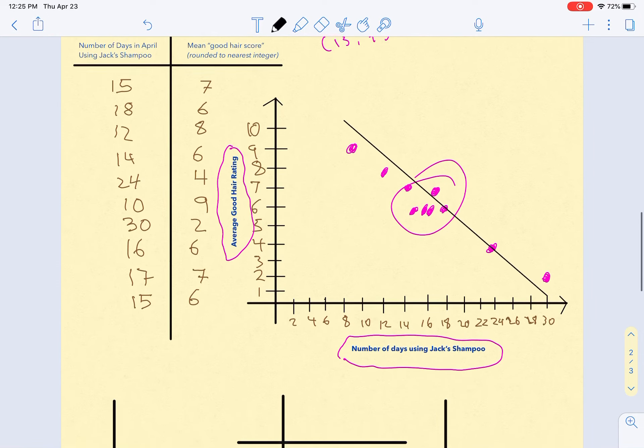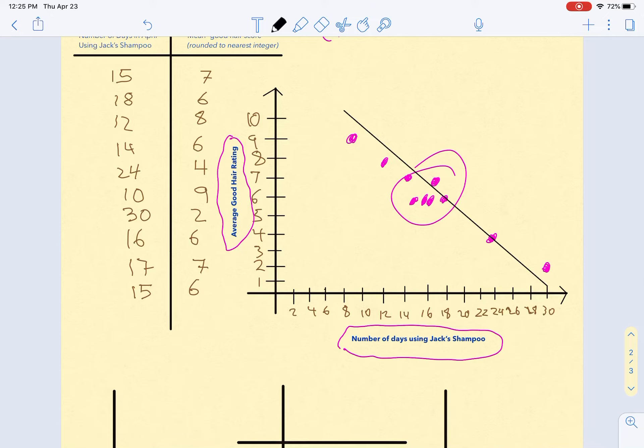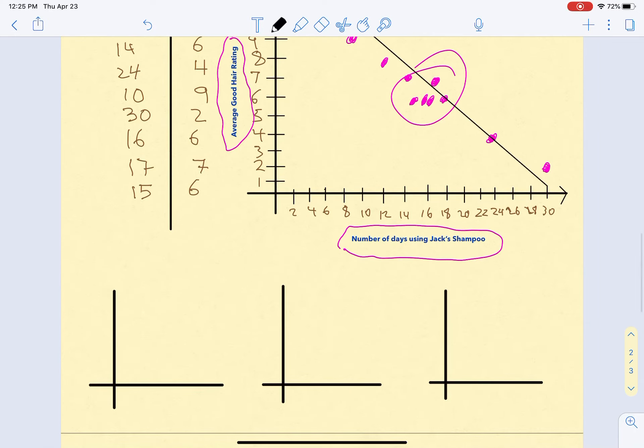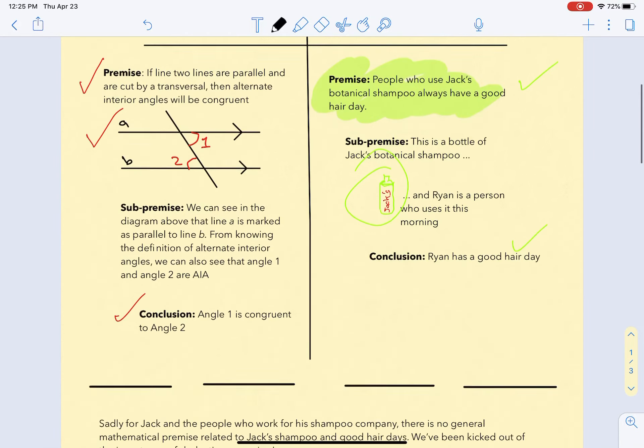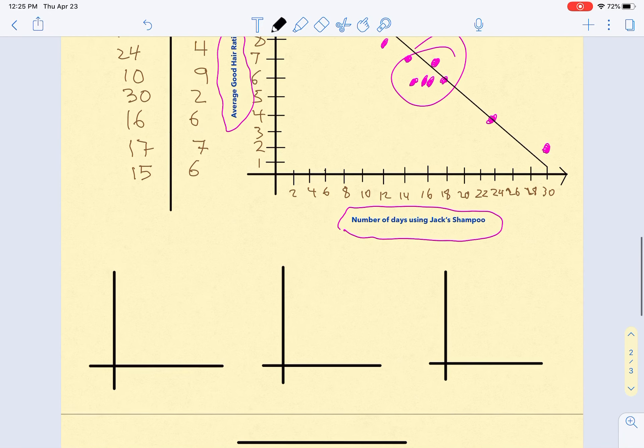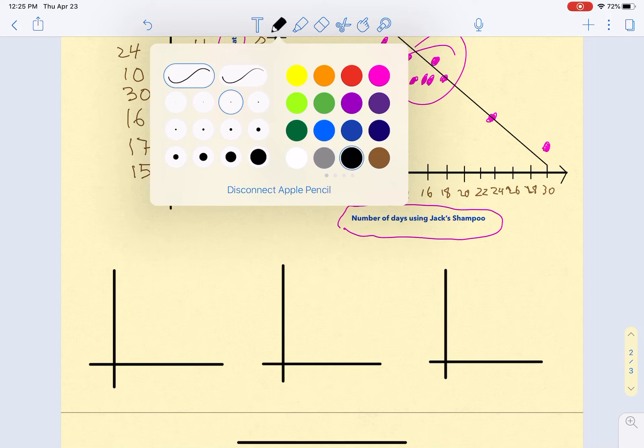It's important to notice that all this is showing is a pattern of association. We only have 10 people interviewed, and it's just an association - we can't say that Jack's shampoo is causing people to be unhappy with the way their hair looks. But we seem to see an association. That's how to draw a scatterplot. Our objective is that students can construct a scatterplot and look for patterns of association, which is pretty straightforward.